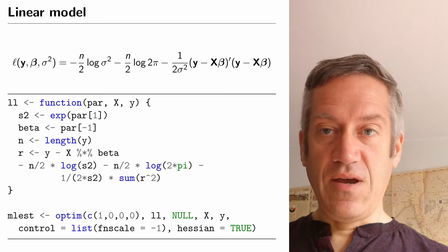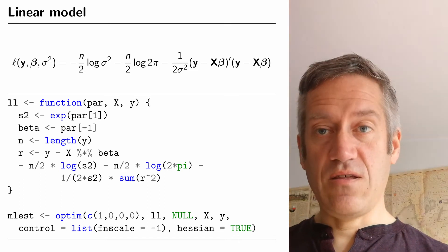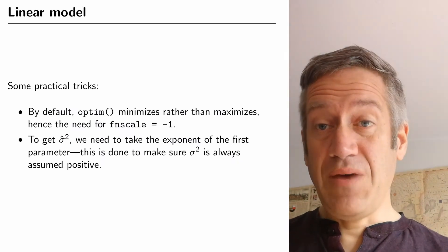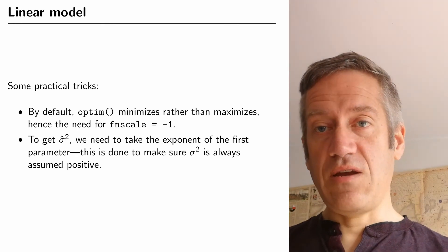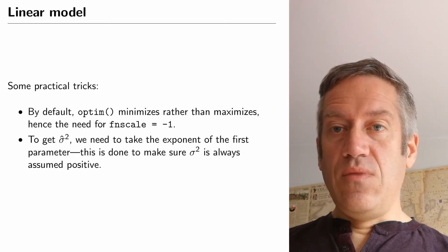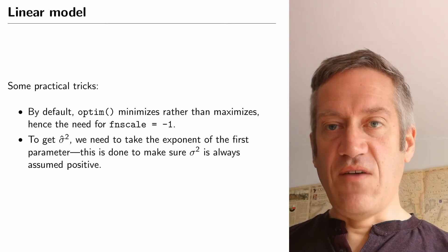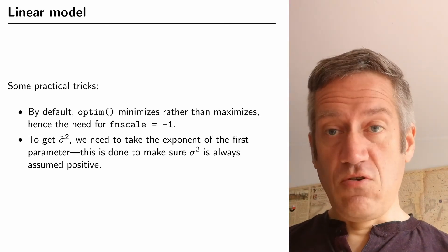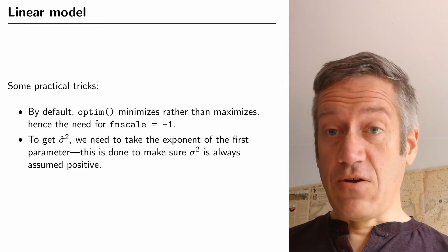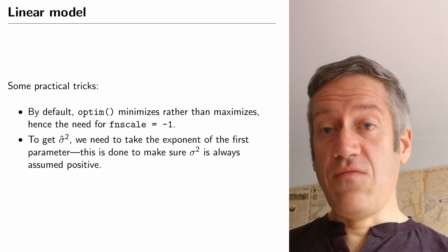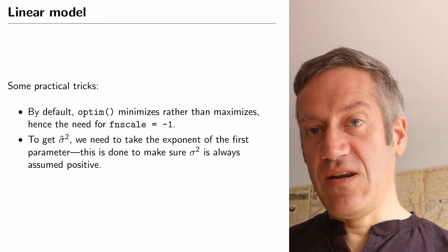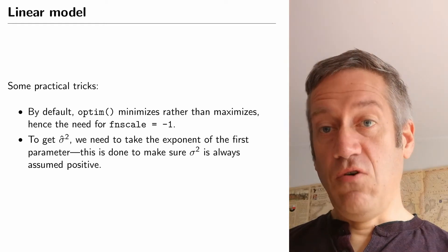I will explain in the following slides what the Hessian matrix is, but we are saying that we want the Hessian matrix. As noted, optim minimizes the function, so we multiply the likelihood by minus one using the fnscale parameter. Additionally, sigma squared is always a positive value — we can only have a positive variance — so we don't want optim to search for negative values. To handle this, instead of estimating sigma squared directly, we estimate the exponent of sigma squared. That way, even if a negative value is tried, it will always lead to a positive result, though we need to account for this when we look at the estimation results.